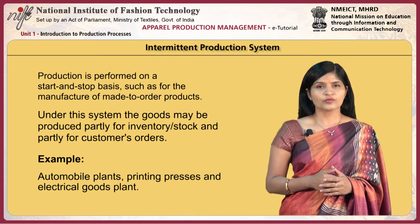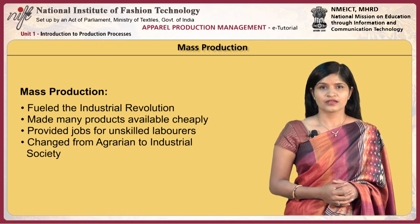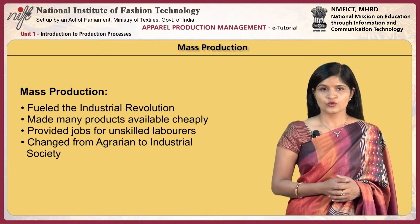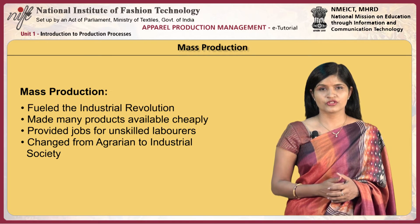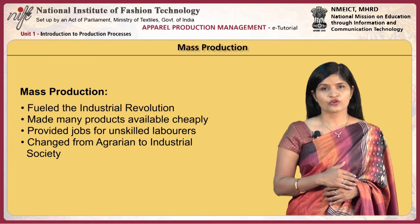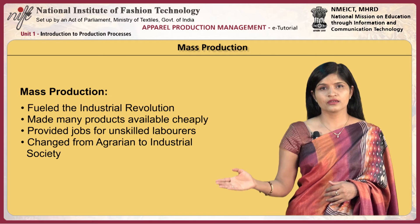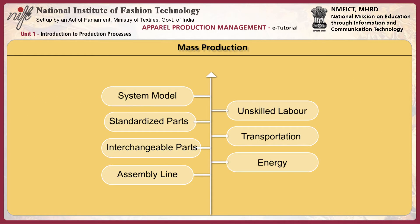This system can also be used for customized products. Mass production is a way to make many products faster and cheaper. It fueled the industrial revolution, made many products available cheaply, provided jobs for unskilled labor, and helped society transition from agrarian to industrial. Mass production uses standardized and interchangeable parts, assembly lines, unskilled labor, transportation, and energy.